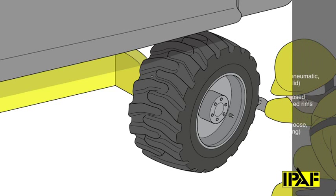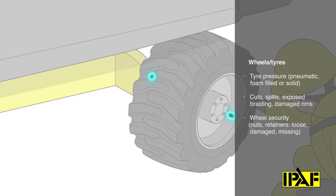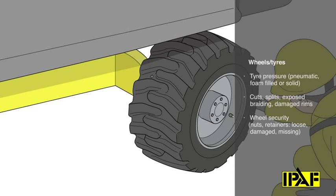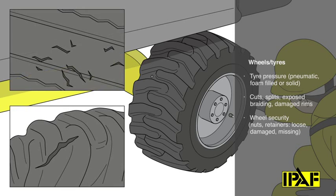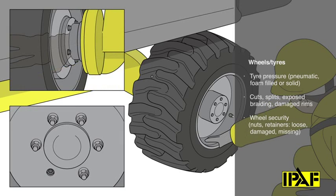Check the tires, remembering that some solid or foam filled tires may have a bolt head showing opposite the valve. Check the tire pressures on pneumatic tires. Look for cuts, splits, exposed braiding and damage to tread or tire wall. Look for cracked or damaged rims.